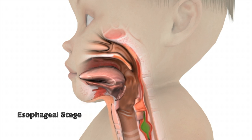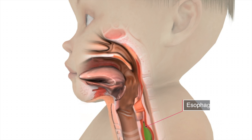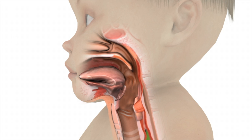Once the bolus passes the cricopharyngeus muscle, the esophageal stage begins. The cricopharyngeus muscle closes back up to prevent any regurgitation back up into the throat. The esophageal muscles continue to propel the bolus into the stomach via coordinated muscle contraction and relaxation, known as peristalsis.